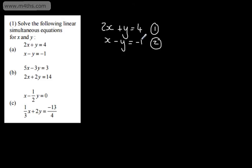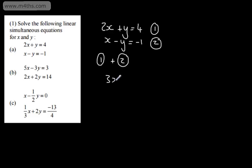We're going to look at two different ways of solving this. The first way is simply by eliminating y. The way we can do this is by adding equation 1 and equation 2. The coefficient in front of y is the same — plus y and minus y — so that will cancel out. Adding together: 2x plus x is 3x, y plus negative y is 0, and 4 plus negative 1 is 3. So by adding the two equations, I've eliminated y. Dividing both sides by 3, x is equal to 1.